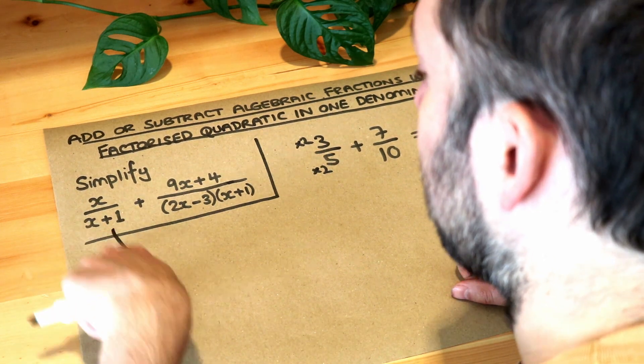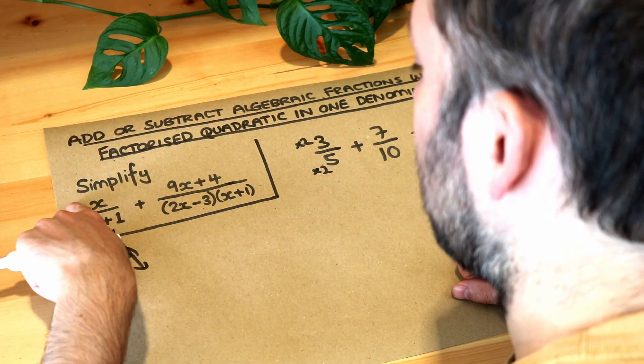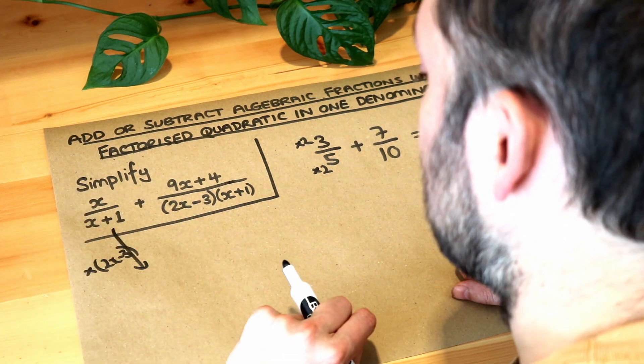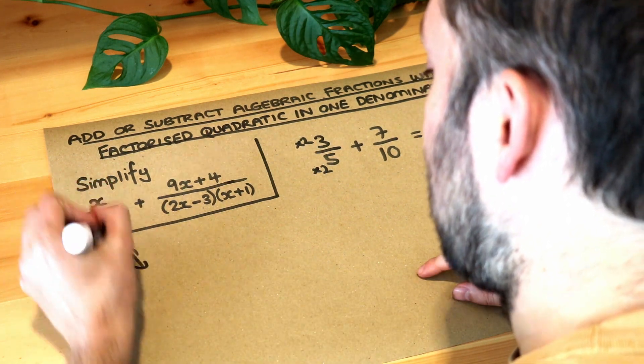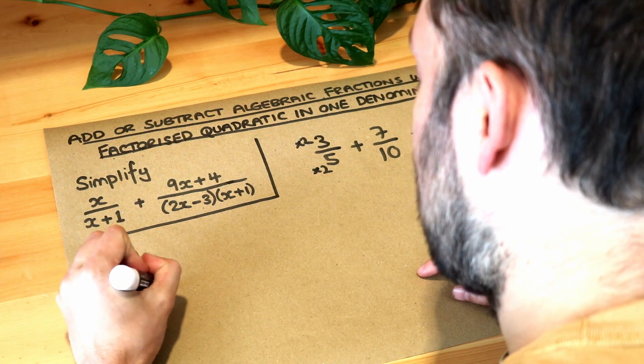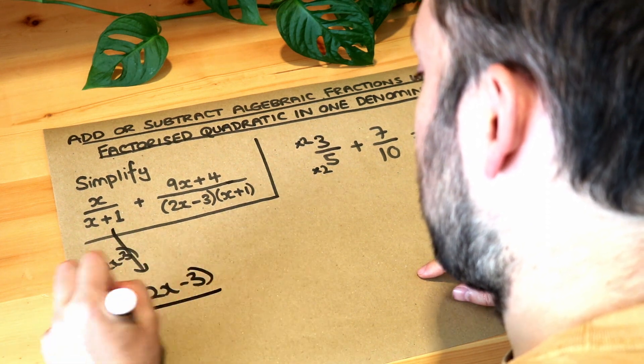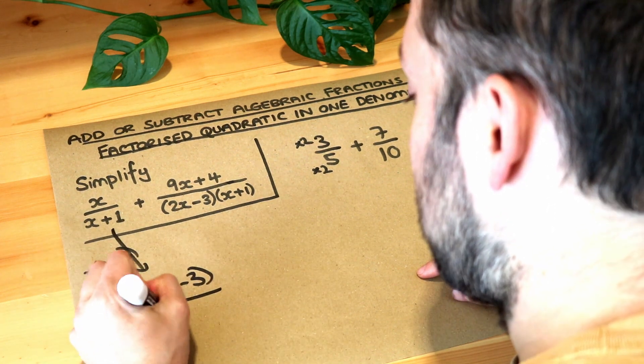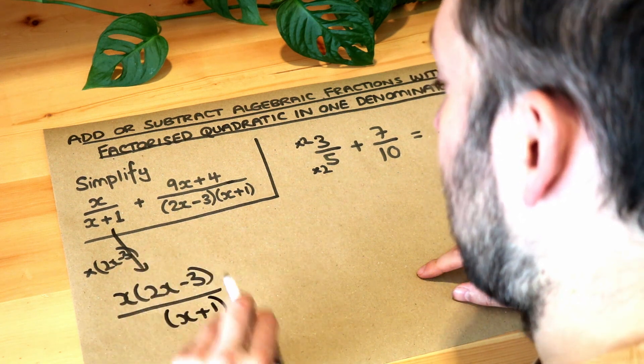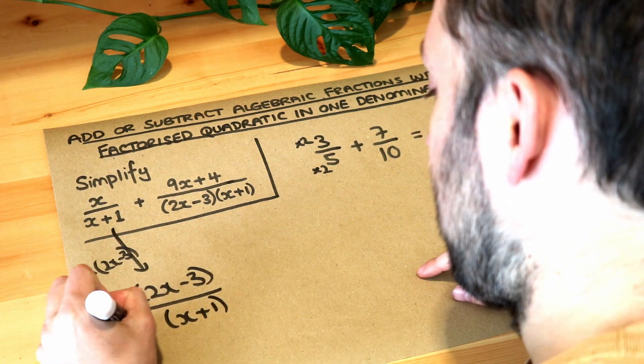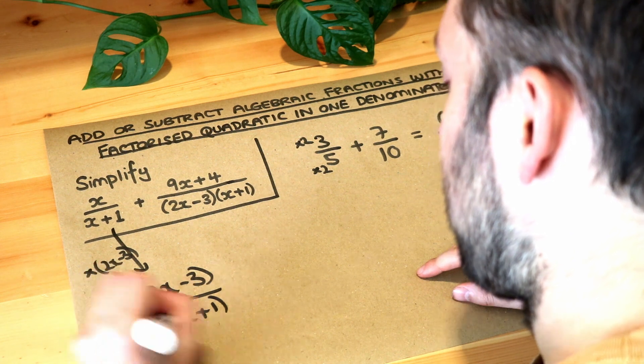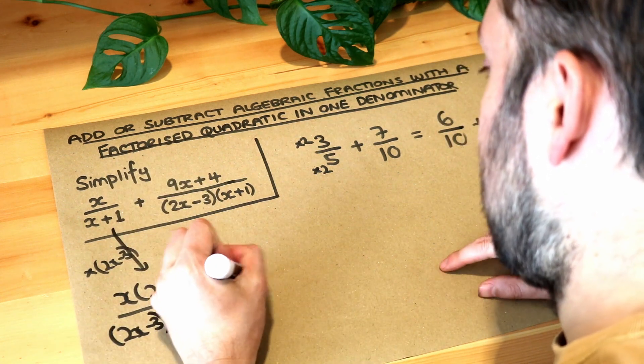So this fraction here, I'm going to multiply the denominator by 2x minus 3 but it also means I have to times the numerator by 2x minus 3 as well so we get x brackets 2x minus 3 and then the bottom, the x plus 1 which I'm just going to put in brackets because now I can times that by the 2x minus 3.